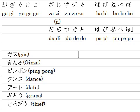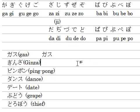Let's practice. Type G-A-S-U, then hit the space key — that gives you ガス. The next word is G-I-N-Z-A. You know Ginza in Tokyo? It's a high-class shopping area. Type G-I-N-Z-A, hit the space key.